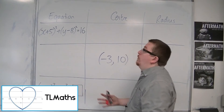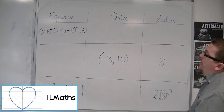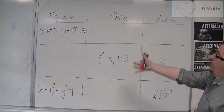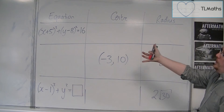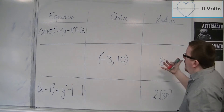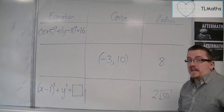Here is a table that we've got to complete. We have, in a couple of cases, part of the equation. We've got centre and radius, so we just need to fill in the gaps.